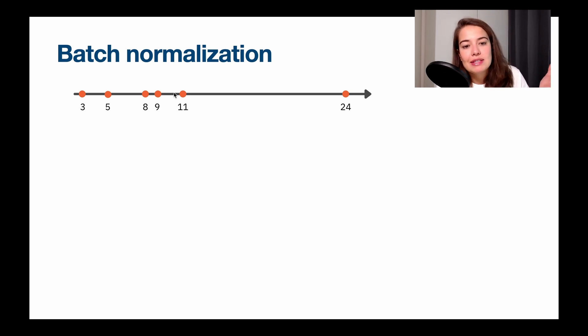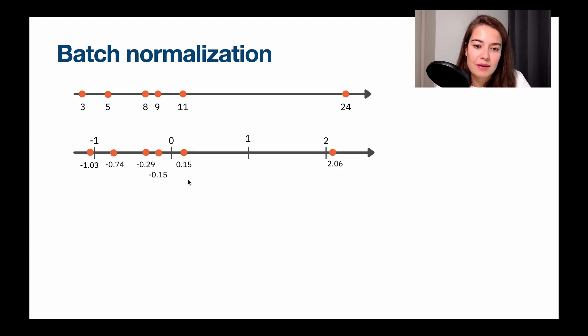Let's say we have this input that either came from the previous layer or it's our first input. If the values are from 2 to 24, we have 3, 5, 8, 9, 11, and 24. So first, what batch normalization does is to normalize them as we talked about. So it normalizes them and calculates the number that they should be. And in this case, we will have a mean of 0 and a standard deviation of 1.